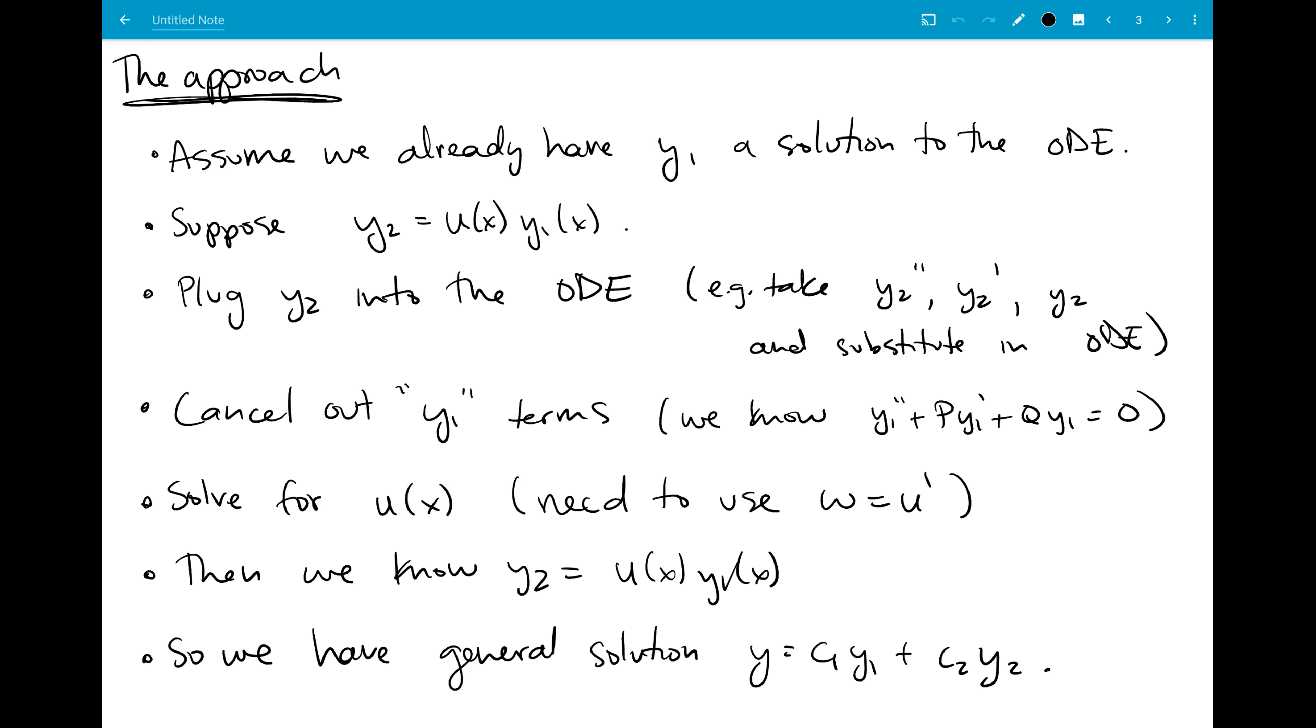So right here I outlined the approach, and I'm going to go ahead and talk through it one more time. But for these problems, we always are given y1 a solution, and we just say the y2 is some unknown u times y1, so our problem becomes to try and find u. And then we just plug into the ODE, which means taking product rule derivatives, but we can always plug it into the ODE.